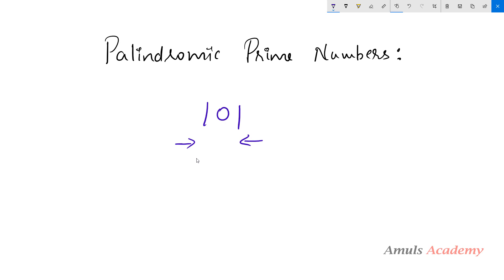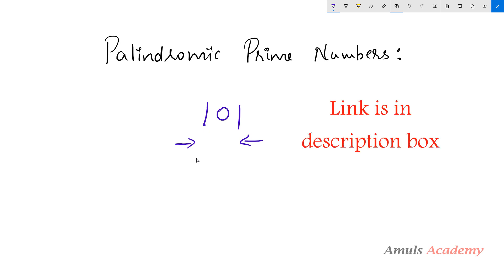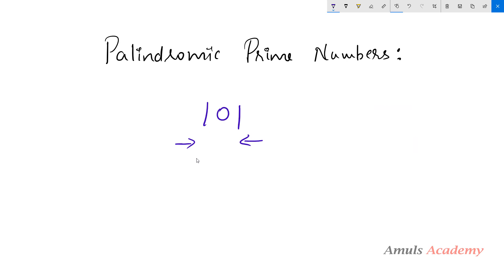In this tutorial I'm not going to explain how to write the palindrome program and prime number program separately, because I already made videos on those. Today I will show you how to combine that code and write a program to check and print palindromic prime numbers.